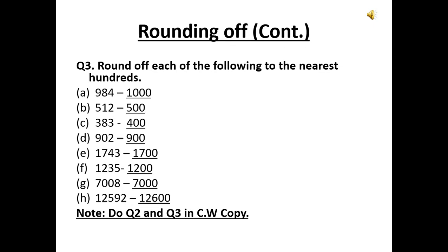Similarly, 7008 will be rounded off to its nearest hundred, which is 7000. The next one is 12592 — look at the hundreds, tens, and ones place: 592. It will slide to its nearest hundred, which is 600, so the answer is 12600.